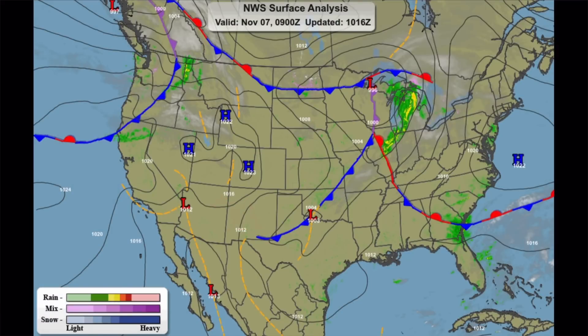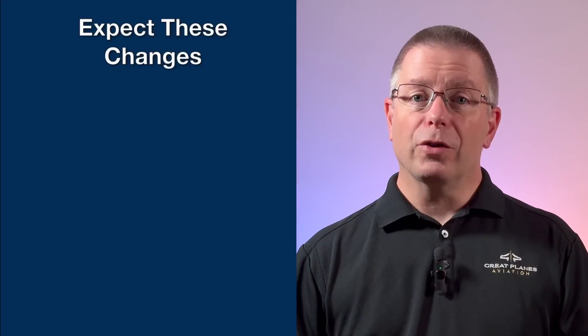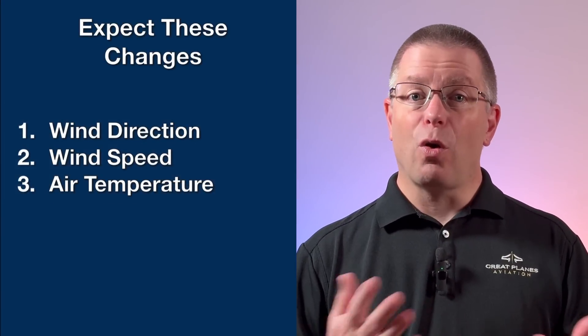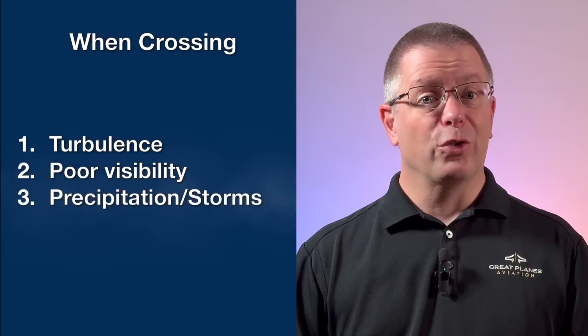Item number two is fronts and air mass boundaries. By definition, a front is where different air masses meet. Because these air masses often differ in air temperature and moisture content, when you cross a frontal boundary, you can expect changes in wind direction, wind speed, air temperature, or all three. In addition, if your route of flight takes you across a frontal boundary, it can mean turbulence, poor visibility, or storms. Unfortunately, frontal boundaries aren't as distinct as the lines that appear on the map. These different air masses usually slide over or under each other, so the impacts can actually exist hundreds of miles on either side of the map symbol.